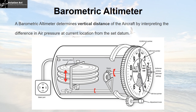The barometric altimeter determines the vertical distance of an aircraft by interpreting the difference in air pressure at its current location from the set datum. This is what the inside of a typical barometric altimeter looks like. There is a static port which feeds in the pressure of the current location of the aircraft into the system, and there are aneroid wafers — a capsule-like structure — inside which pressure in relation to a particular datum is fed. This feeding is done through an adjustment knob, and the display of this datum is seen in the Kollsman window.